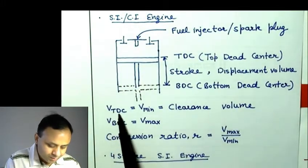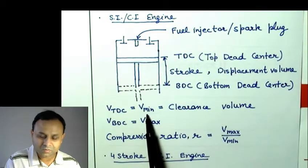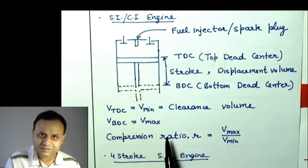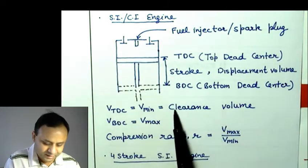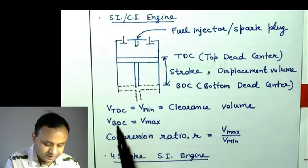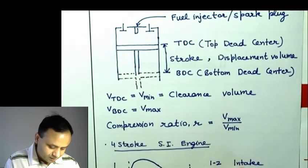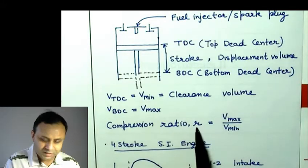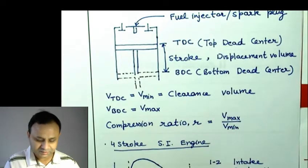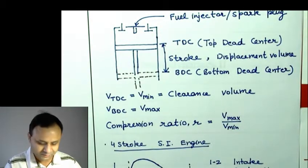The displacement volume is (π/4)·D²·stroke. The volume at TDC is the minimum volume of the combustion chamber and is called the clearance volume. At BDC we have the maximum volume. The compression ratio r is the ratio of maximum volume to minimum volume. That is the basic terminology.